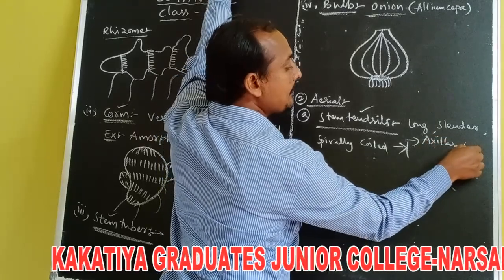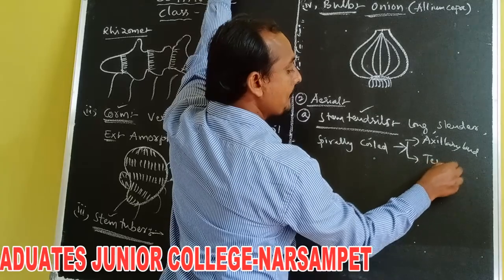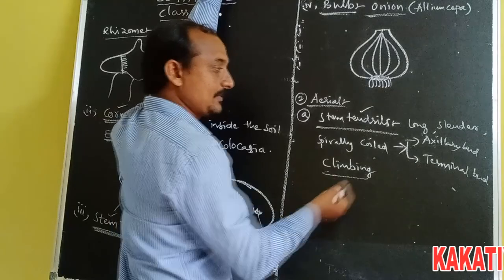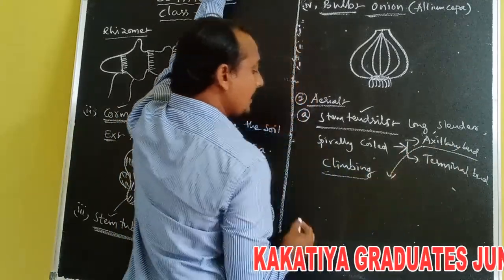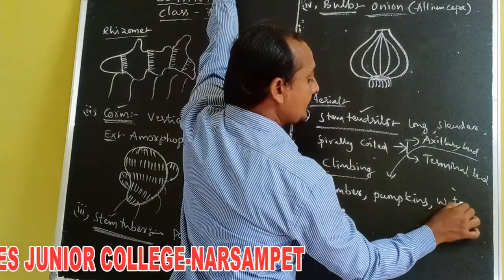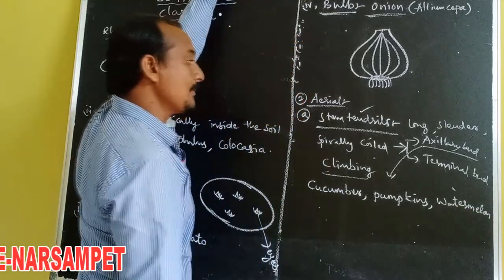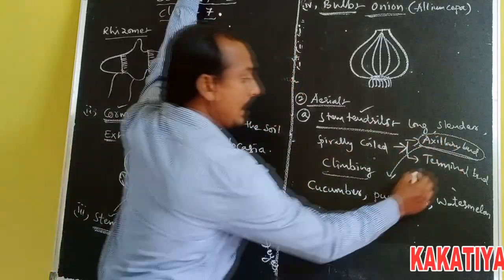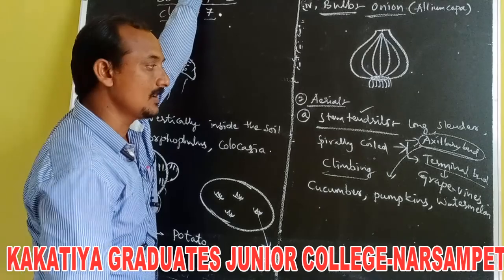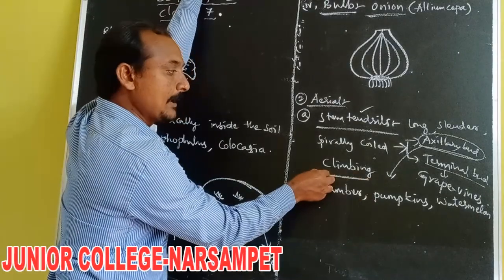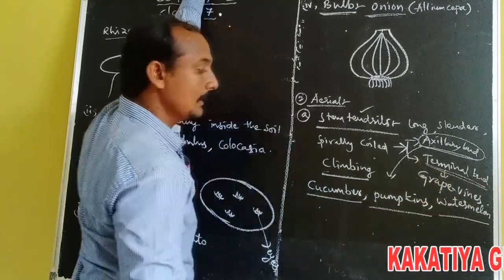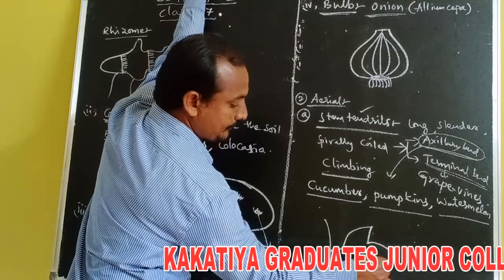Tendrils are useful for climbing purpose. They develop from axillary bud in gourds like cucumber, pumpkin, and watermelon. These are the examples of stem tendrils. This is the diagram of stem tendrils.